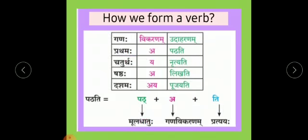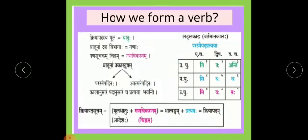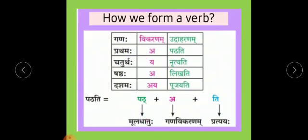Now, what is Vikaranam and what is Ganaha? In the previous slide we saw that Dhatu naam Dasha Vibhagaha — the root of the verb is divided into 10 parts: Prathamaha, Dvitiyaha, Tritiyaha, Chaturthaha, Panchamaha, Shashtaha, Saptamaha, Ashtamaha, Navamaha, Dashamaha. From these, we are going to study only four Ganaha: Prathamaha, Chaturthaha, Shashtaha, and Dashamaha.